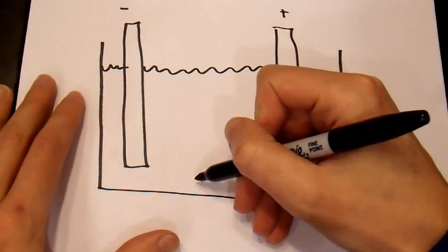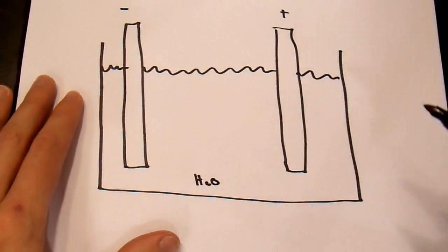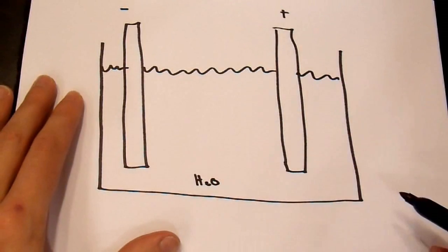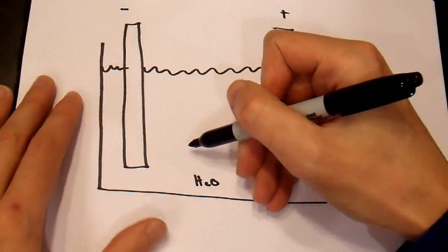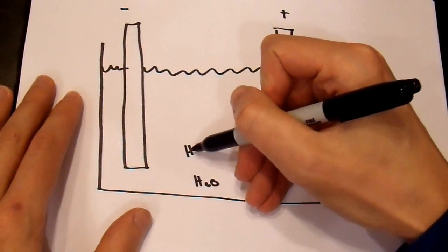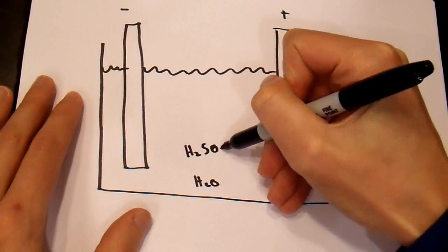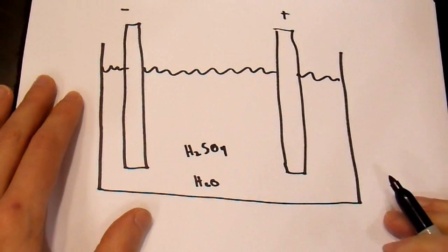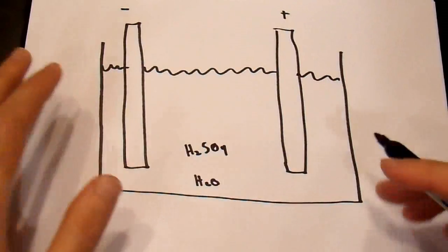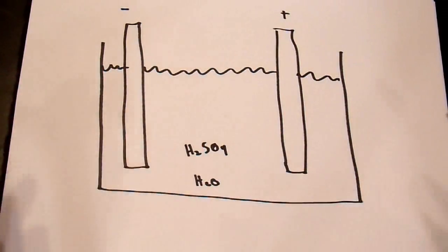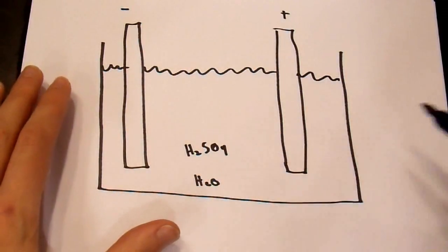What is the electrolyte? It is water, H2O, and you put in some sulfuric acid, which happens to be H2SO4. And, as soon as you put sulfuric acid into water, it disassociates.